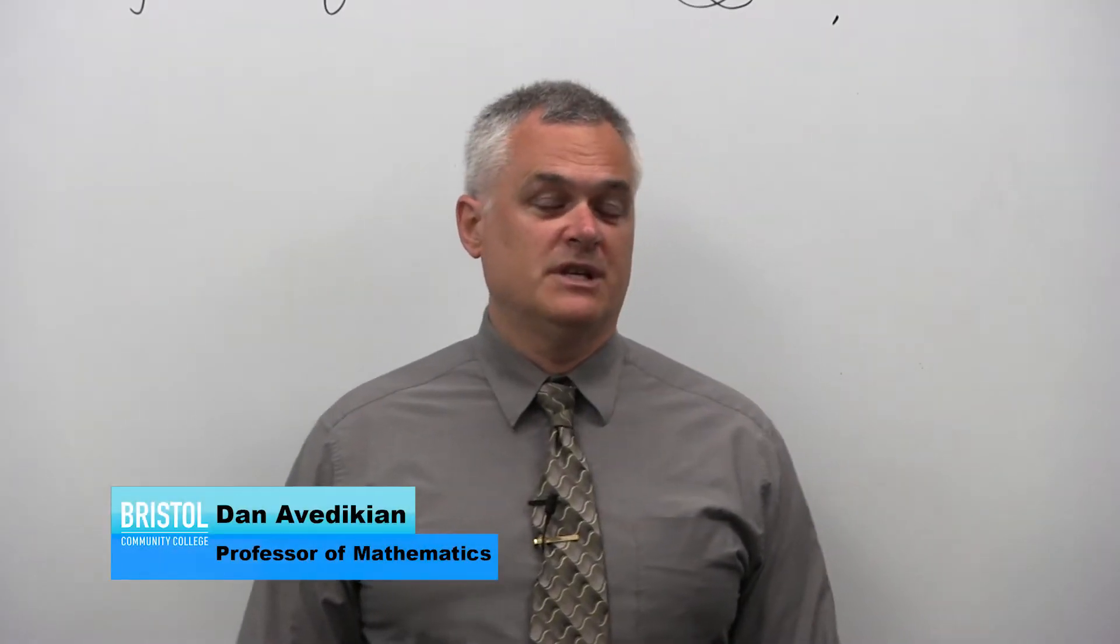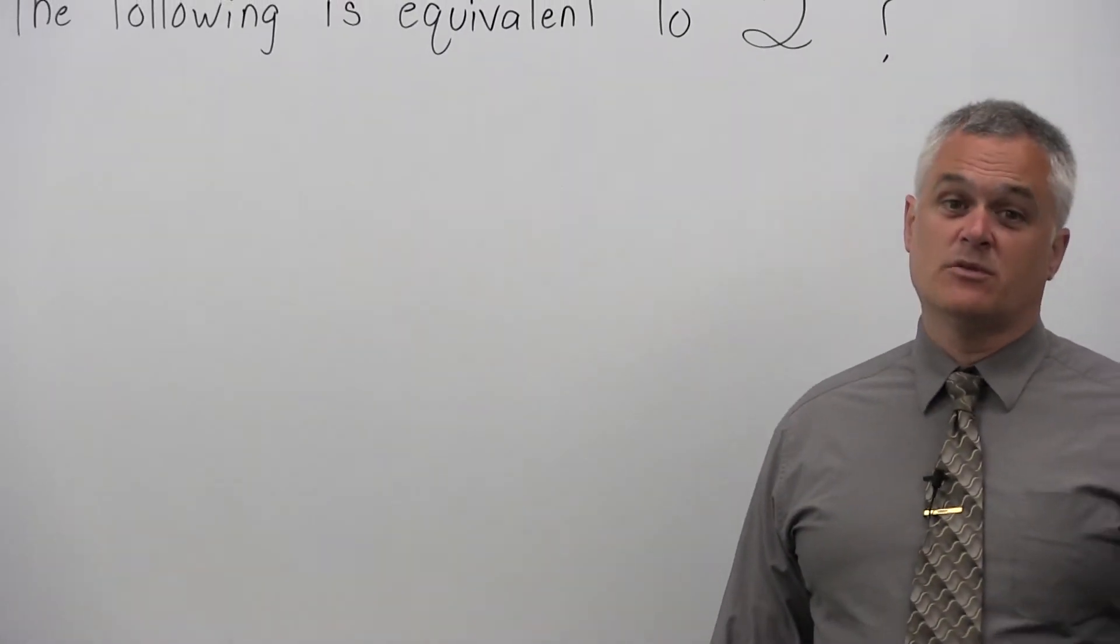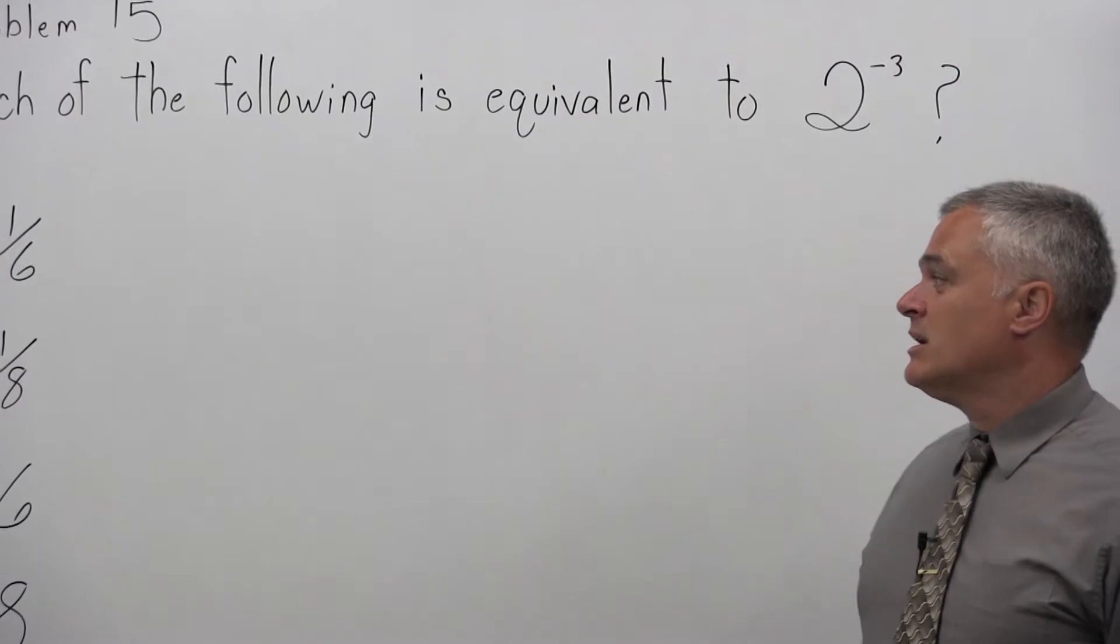This is Problem 15. It says, which of the following is equivalent to 2 to the negative third power? So I have a base of 2 and an exponent of negative 3, and there are four options.